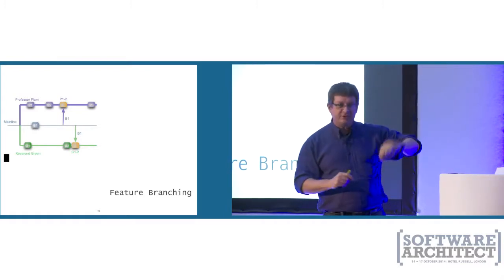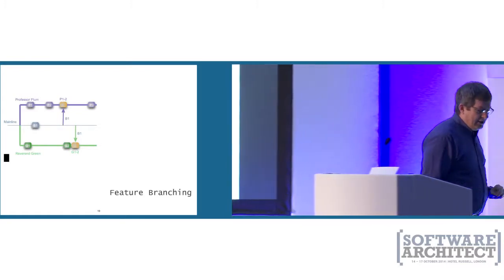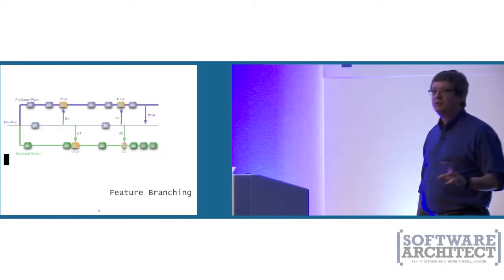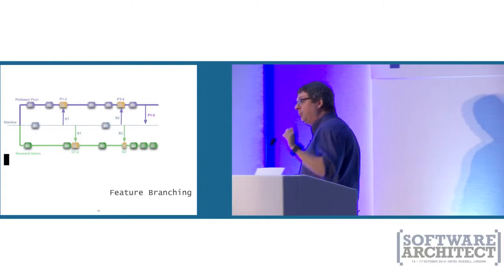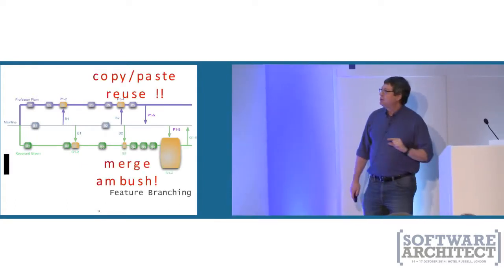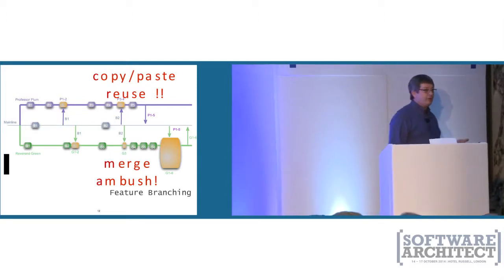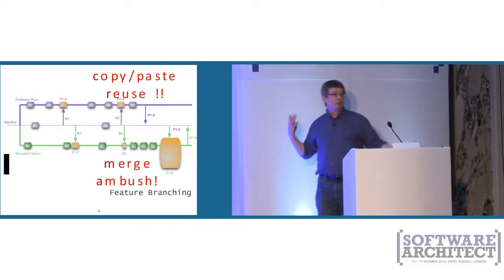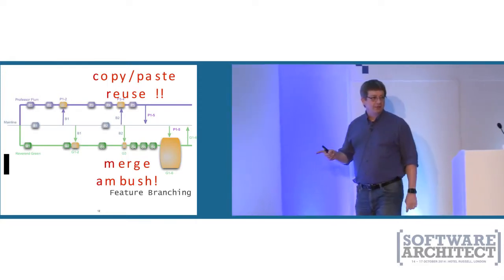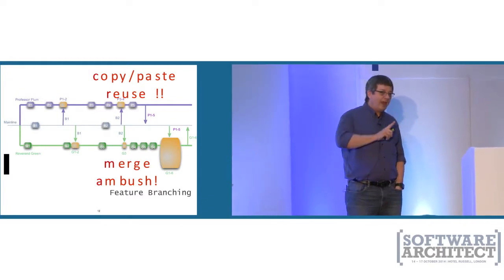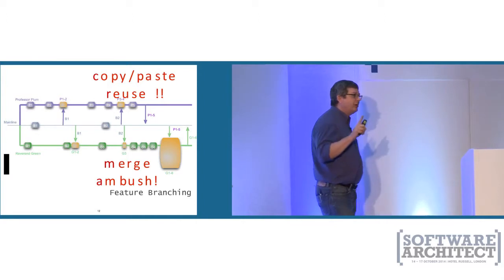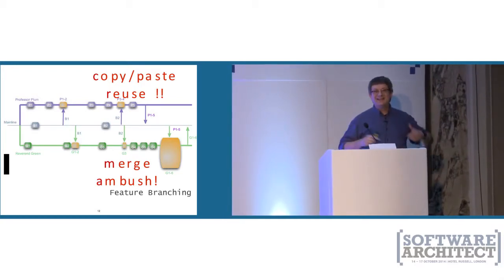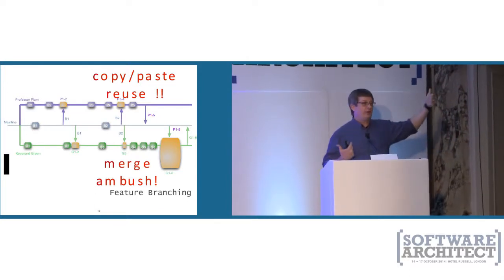Both Reverend Green and Professor Plum, being good version control citizens, know you should periodically pull from trunk since active development is still going on there. The best practice is to pull periodically and handle the little merge conflicts that pop up. A few days go by, a few weeks, maybe a couple of months — and it's decided: we love Professor Plum's new feature. Professor Plum pushes to trunk and performs what we refer to as a merge ambush on Reverend Green.